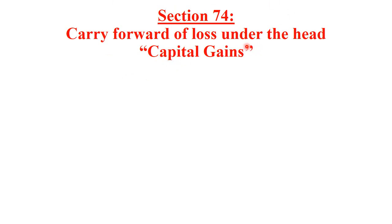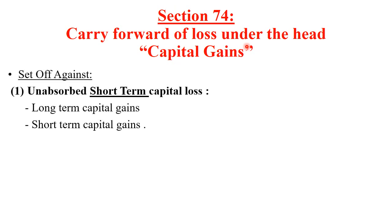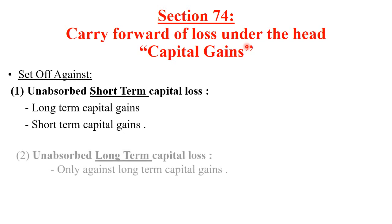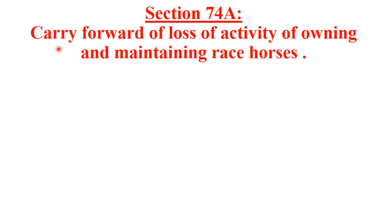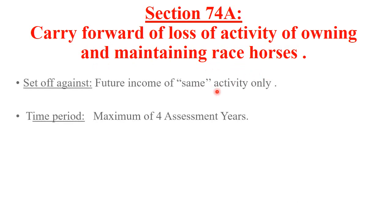Carry forward of losses under the head capital gains: short term capital loss can be adjusted against long term capital gain or short term capital gain. Long term capital loss can be adjusted only against long term capital gain. Loss from the activity of owning and maintaining of race horses can be set off only against income from the same activity.